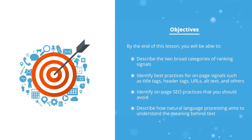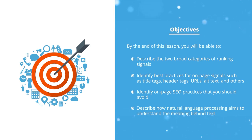And finally, describe how natural language processing aims to understand the meaning behind the text. On-page optimization, as the name suggests, is the practice of optimizing web pages to rank higher and get relevant traffic from the search engine.